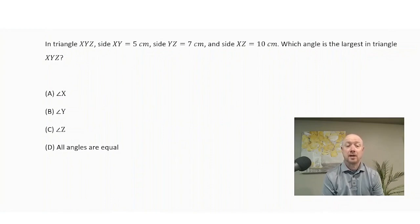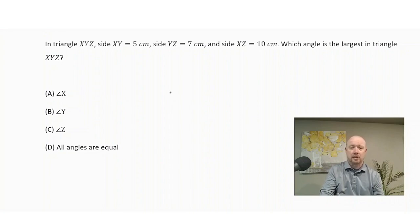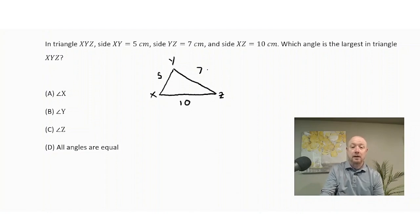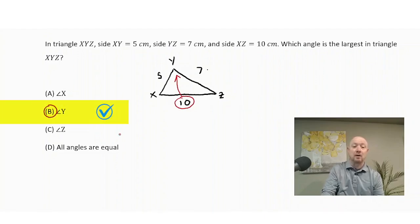In triangle XYZ, side XY equals 5 centimeters, side YZ equals 7 centimeters, and side XZ equals 10 centimeters. Which angle is the largest in triangle XYZ? Drawing triangle XYZ: XY is 5 cm, YZ is 7 cm, and XZ is 10 cm. In a triangle, the angle opposite the biggest side is the biggest angle. Side XZ equals 10 is the biggest side, and the angle opposite it is Angle Y. So Angle Y is the largest angle in this triangle. We used the test-taking strategy of drawing a picture.